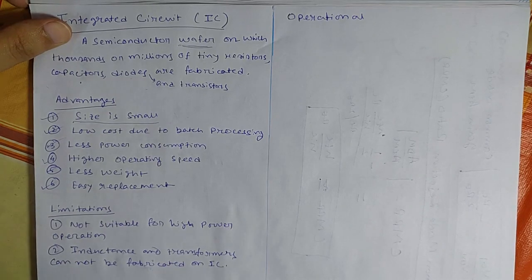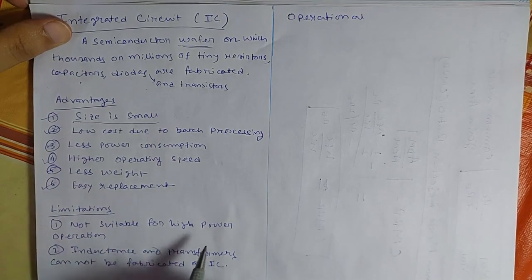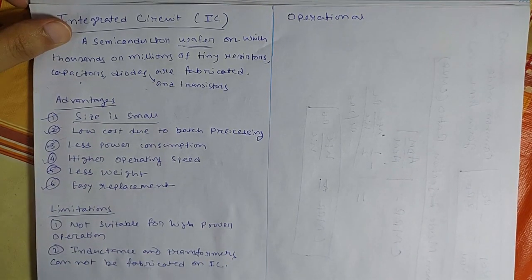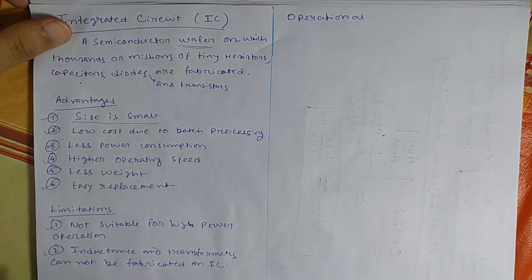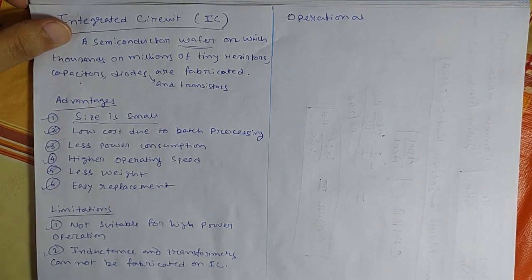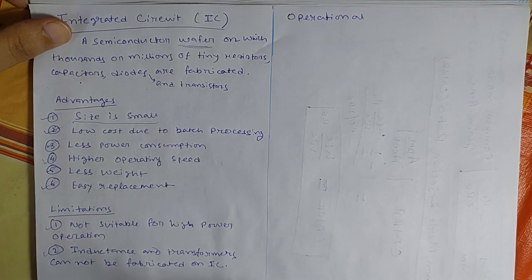There are also several limitations. First one is not suitable for high power applications. So IC you cannot use for maybe megawatt range powers, but it is suitable for low power like milliwatt watt range power. Second one is inductance and transformers cannot be fabricated on the IC.